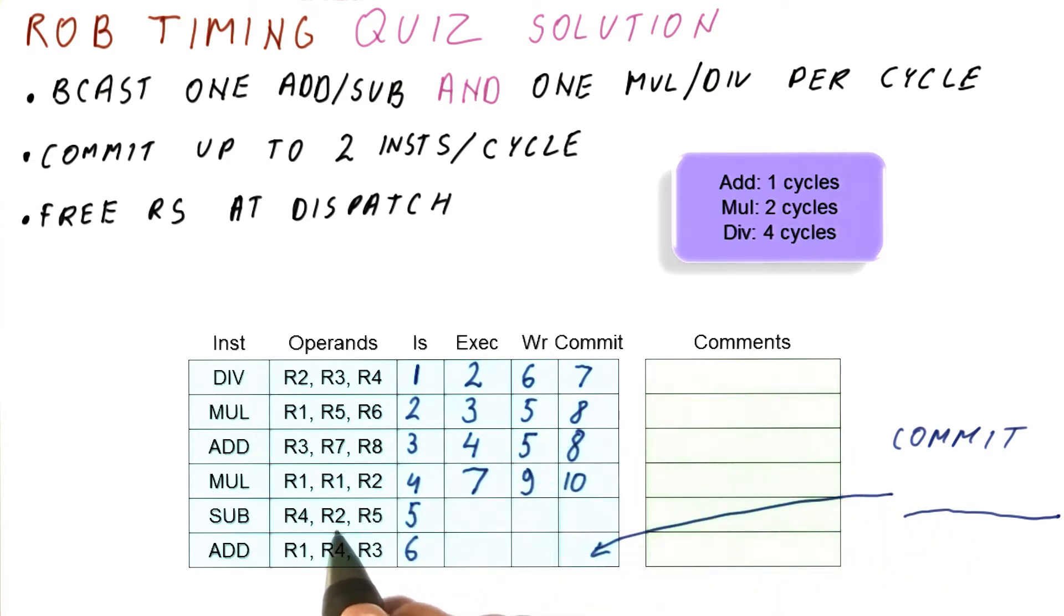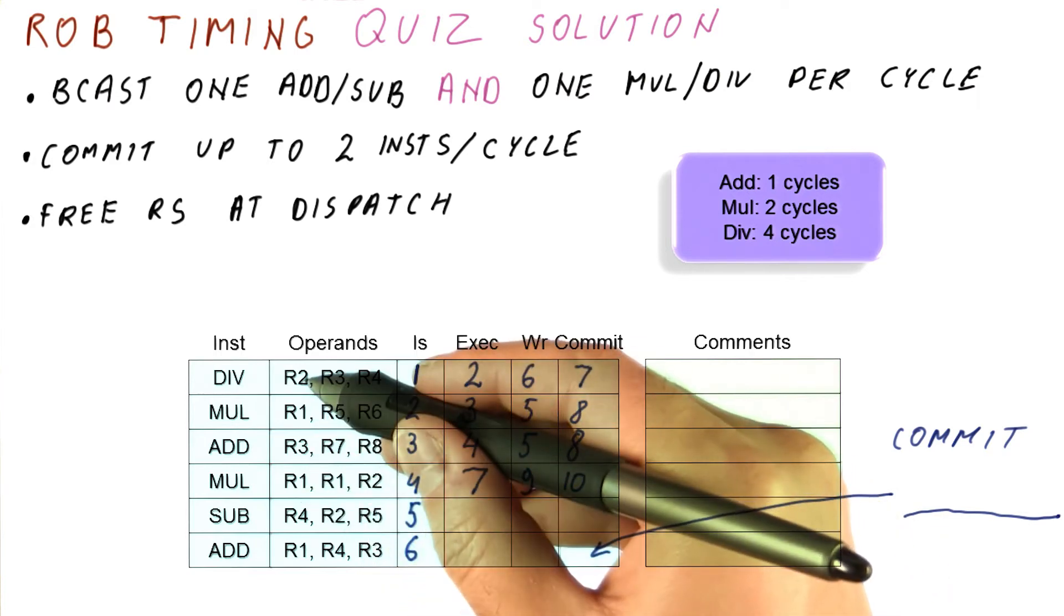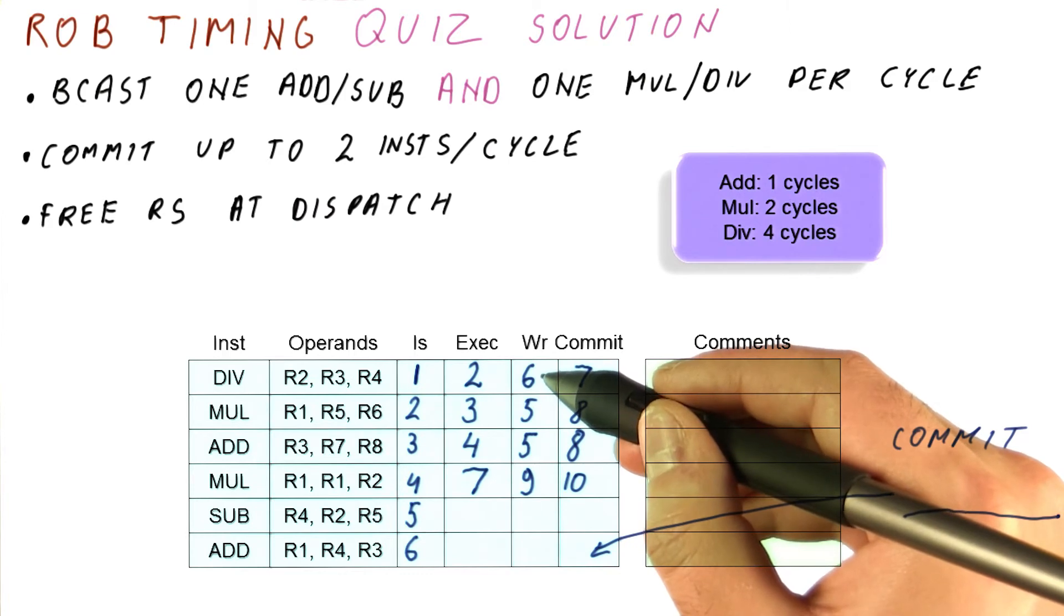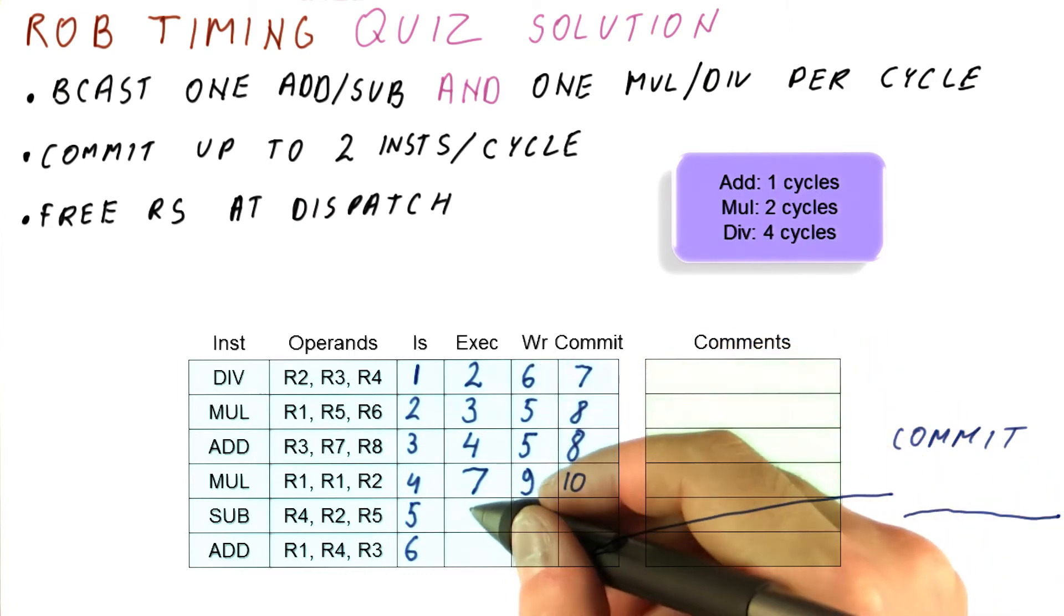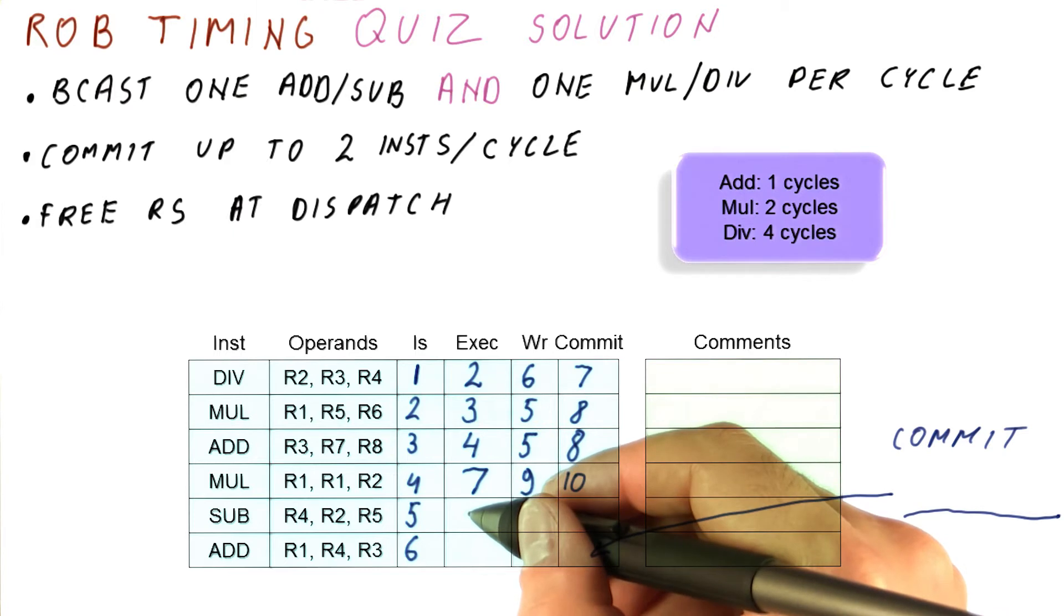The subtract here uses R2 and R5. R5 is not produced by any of the previous instructions, but R2 is. So we actually have to wait until cycle seven before we can proceed to execution. Now, because in cycle seven, other instructions are also beginning execution, we have to figure out, can we actually run this subtract now, or do we have to wait for the next cycle?